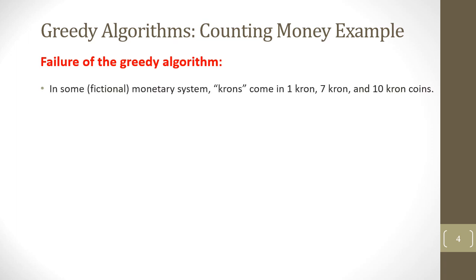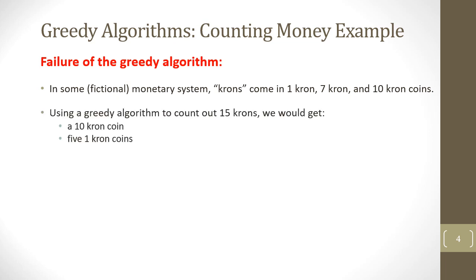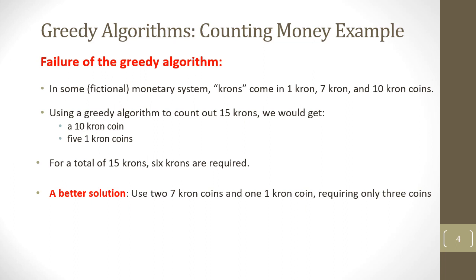Let's assume a fictional monetary system called crown, which has 1 crown, 7 crown, and 10 crown coins. Using the greedy algorithm, we need to count 15 crowns. We would get a 10 crown coin followed by five 1 crown coins, for a total of 15 crowns using 6 coins. However, a better solution is to use two 7 crown coins followed by one 1 crown coin, which requires only 3 coins.